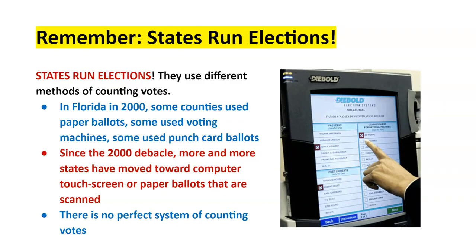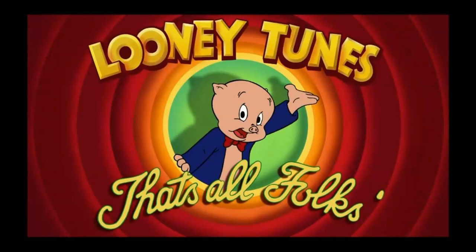If you remember nothing else about voting from this section, remember that states run elections. It is Florida, Maryland, New Jersey, California, Texas — they are the ones that run their elections, determine the systems used, and determine voter eligibility. The Supreme Court can weigh in on whether state laws are constitutional or unconstitutional. There is no perfect system — all of them have flaws, advantages, and disadvantages. States continue to run and conduct those elections, and that is how people vote — the most important aspect of political participation today. This concludes section four; we'll see you in the next chapter on demographics.